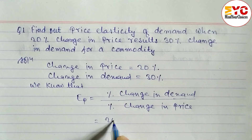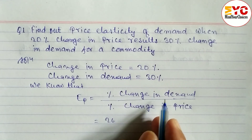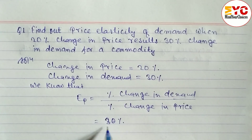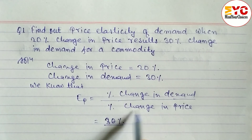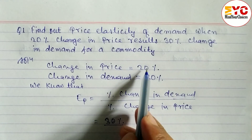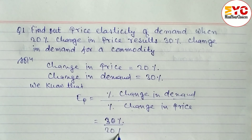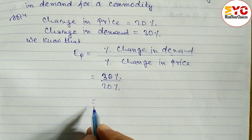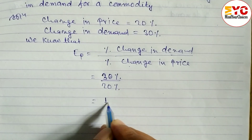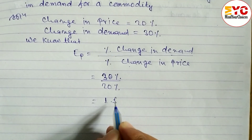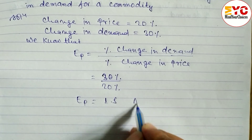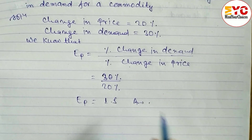So, percent change in demand is 30%, divided by percent change in price which is 20%. When you divide this, we get 1.5. So the price elasticity of demand is equal to 1.5, which is the answer.